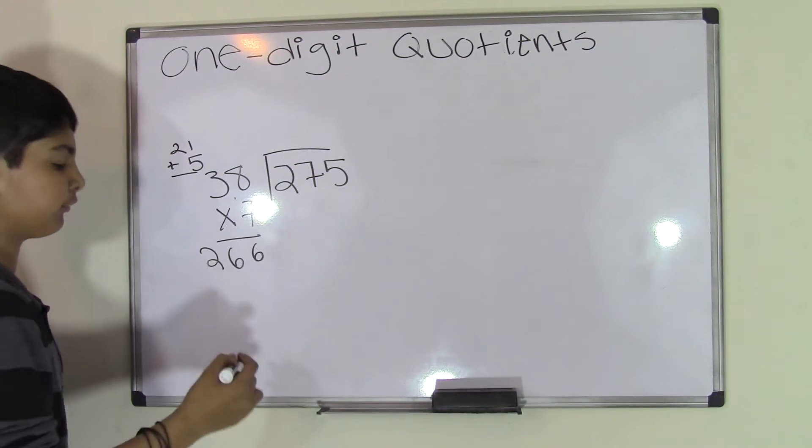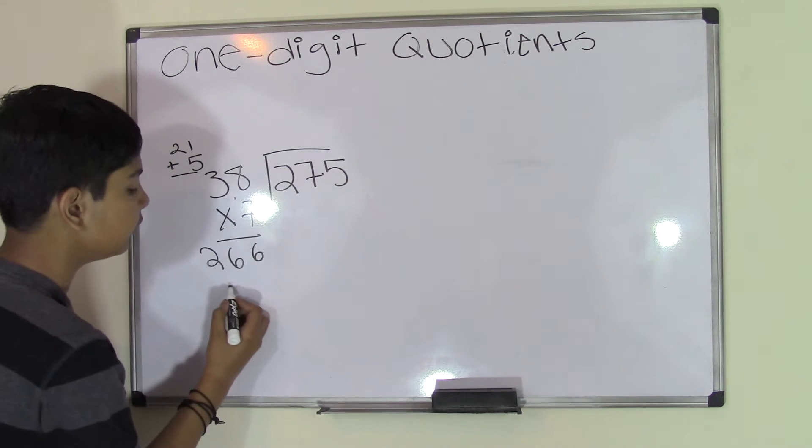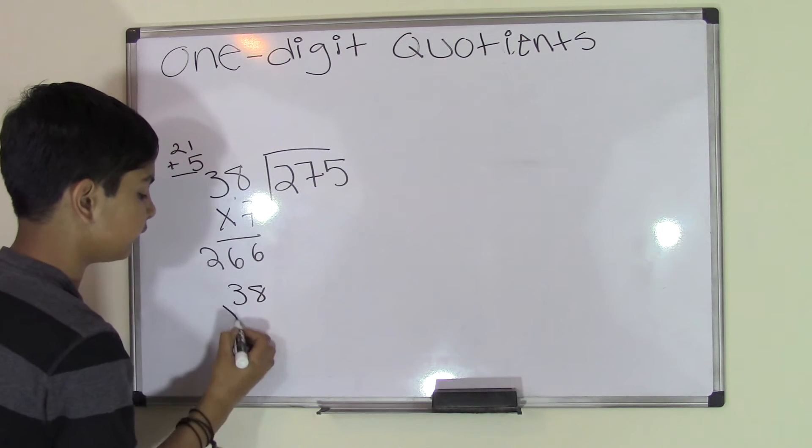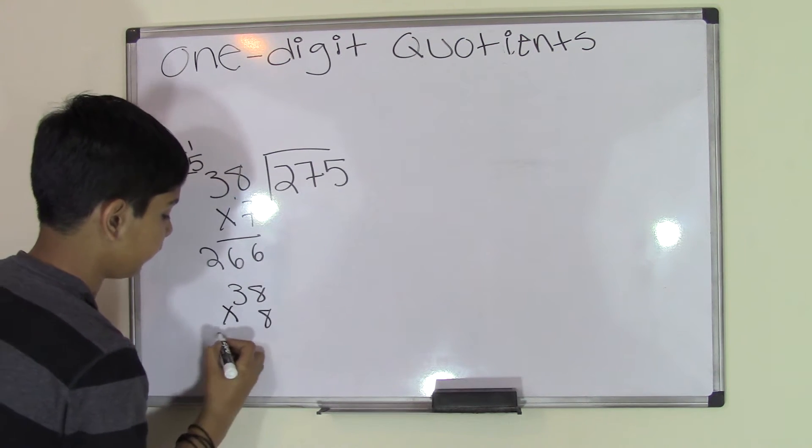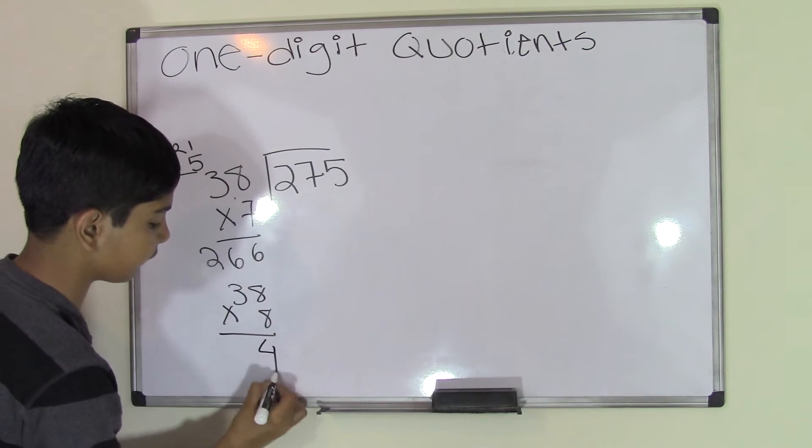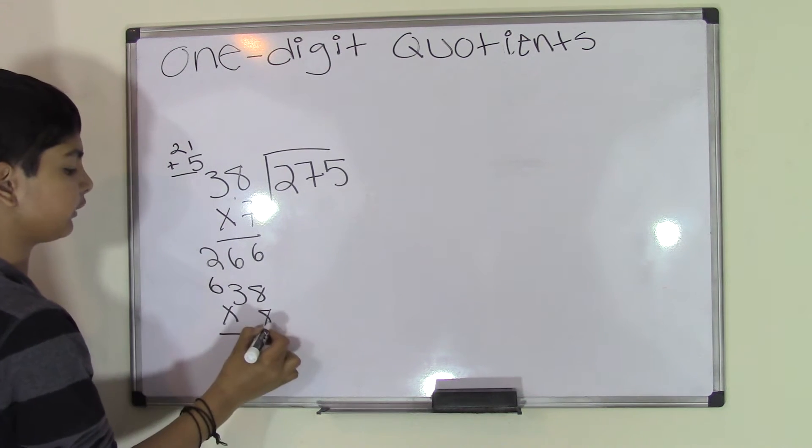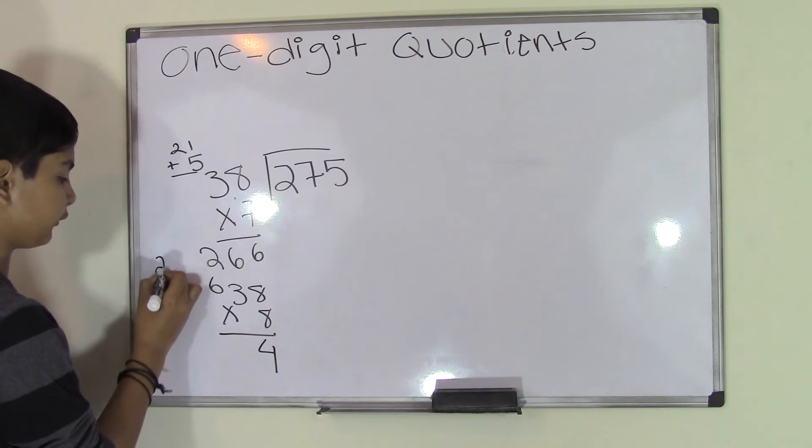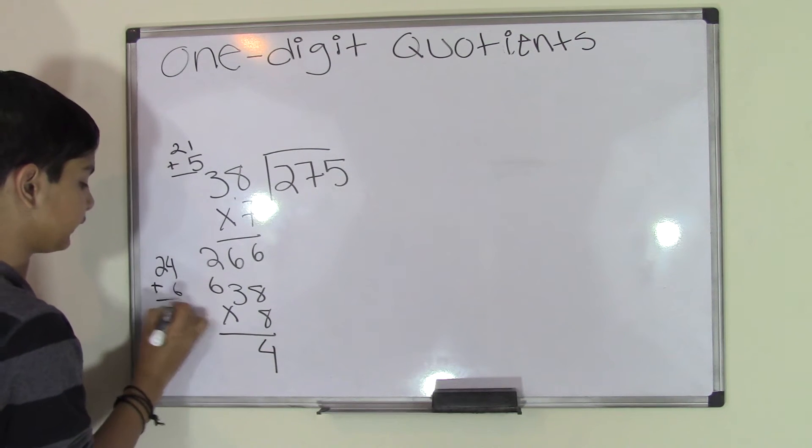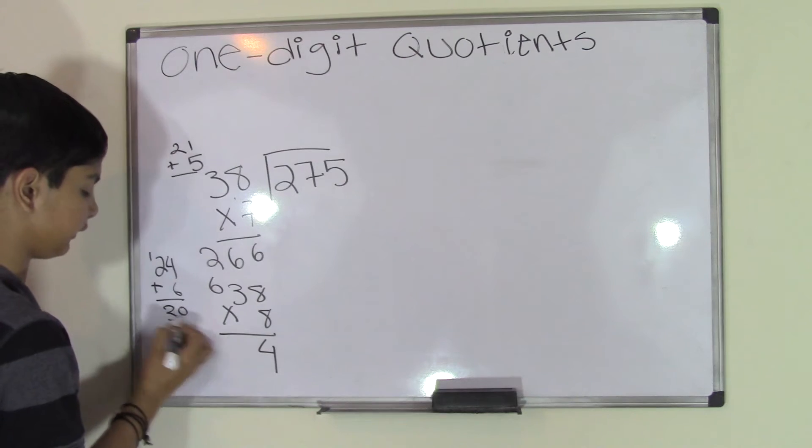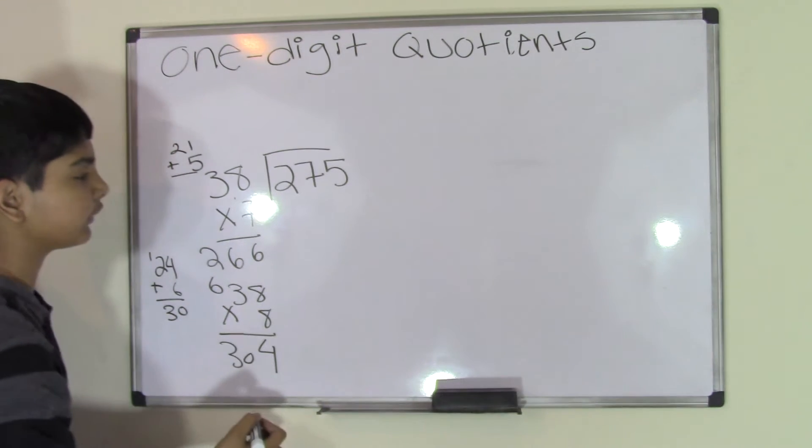So 38 times 8. 8 times 8 is 64, that's 6 over here. 8 times 3 is 24, so 24 plus 6 is 30, and that's 304. But 304 is greater than 275, so we'll have to go with 38 times 7.